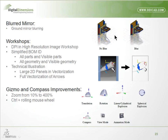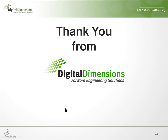Quick recap of remaining 2011 items: blurring mirror for ground (already shown), DPI control within the High Resolution Workshop, simplified BOM IDs making them easier to add, large 2D panels are now vectorized in tech illustrations, and the look of gizmos and compasses was updated. That covers everything — we actually finished a little ahead of schedule.